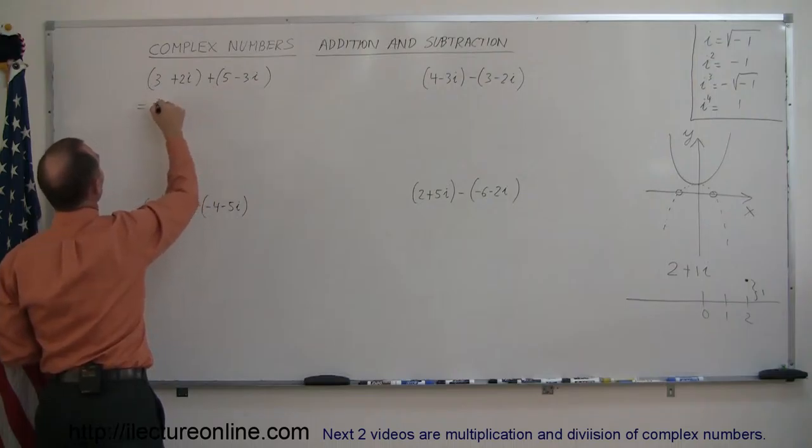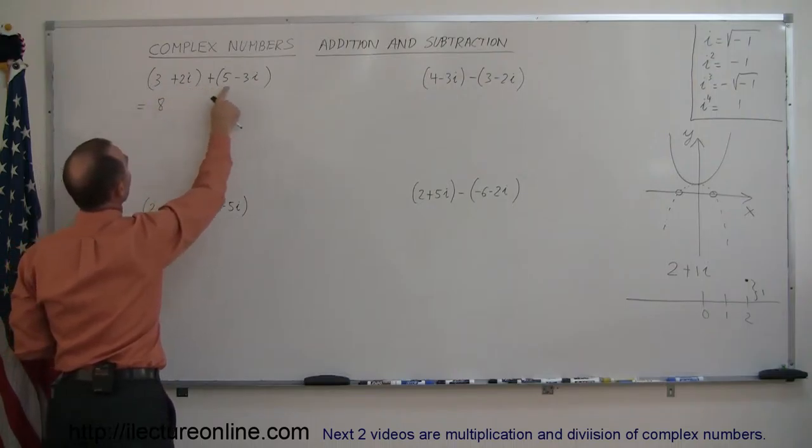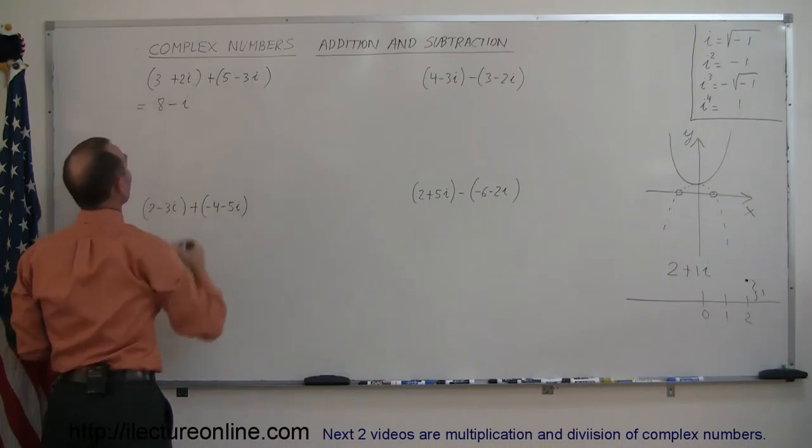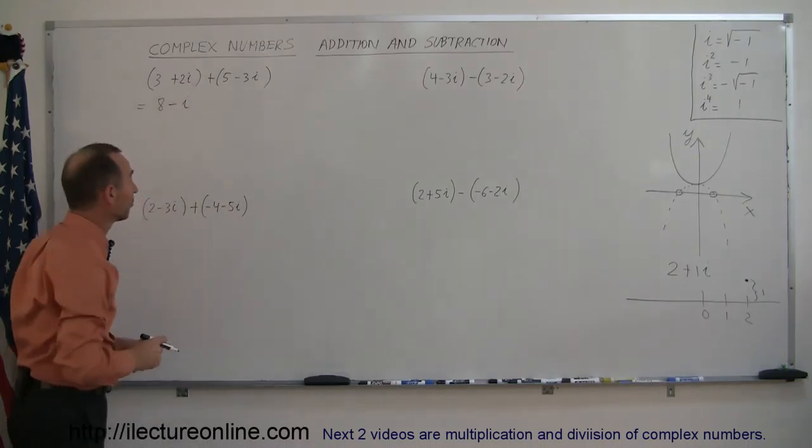So 3 plus 5 is 8, and 2i minus 3i is minus 1i. That is the solution. Fairly simple.